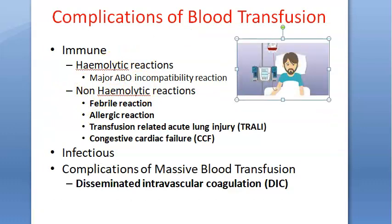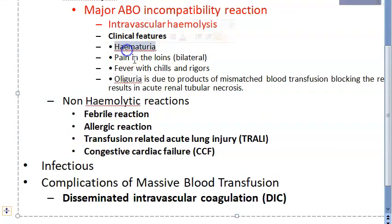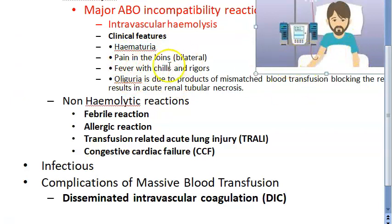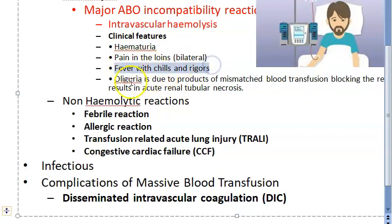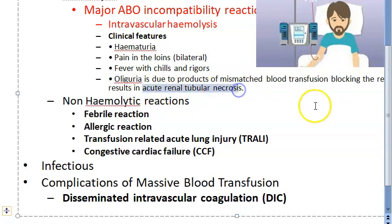If they give you the absolutely wrong blood, what can happen? You can have blood in urine - that is called hematuria. You can have bilateral pain in the loins, fever with chills and rigors, and oliguria because your renal tubules are going to be blocked. This blockage can finally lead to acute renal tubular necrosis.